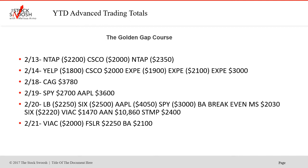CAG won on the 18th, SPY won, and Apple on the 19th. 20th, LB lost, Apple lost, SPY lost, BA breakeven, MS won, Viacom won, AAN won, and STMP won. You can see here why most of the best days are do one and done. So the 20th was a rough day — the AAN was really the one that worked.